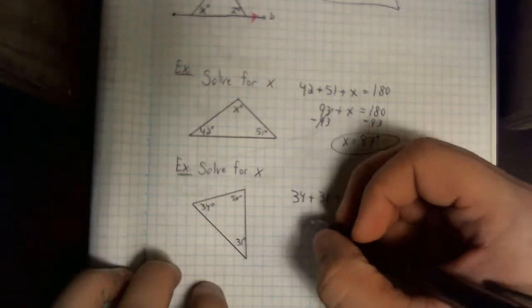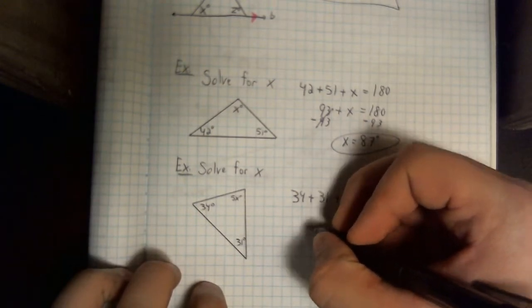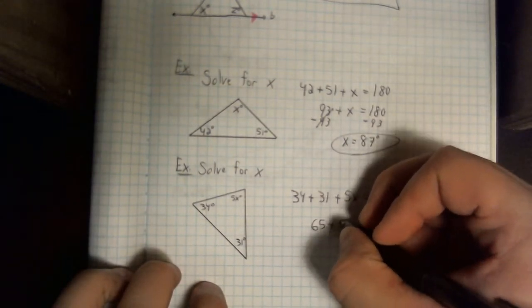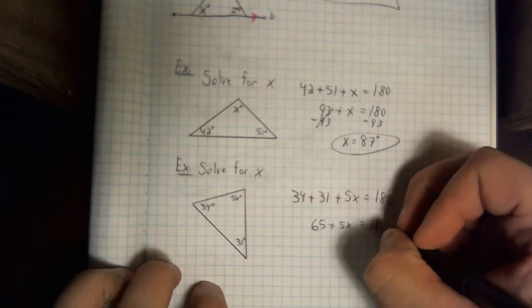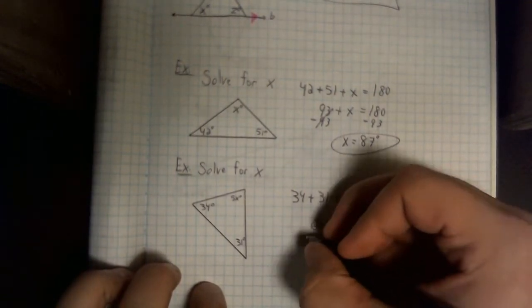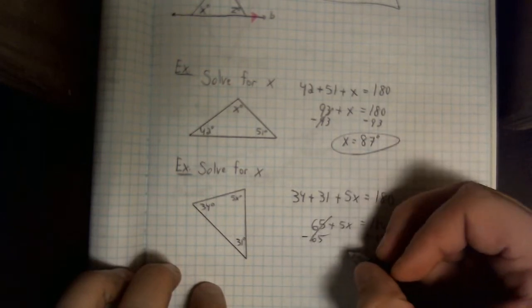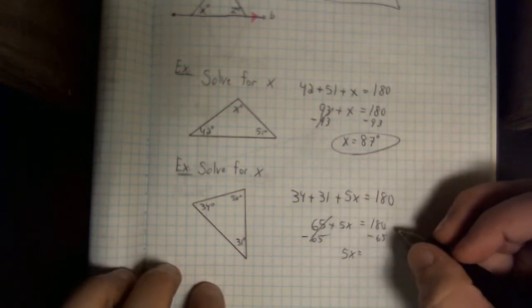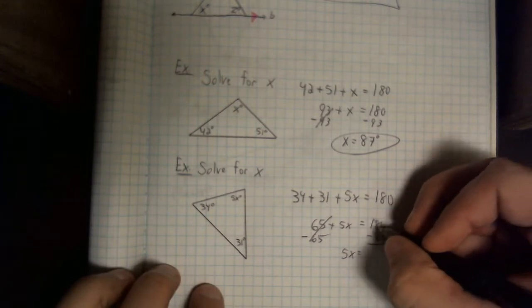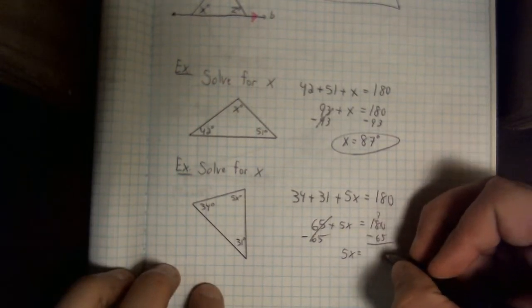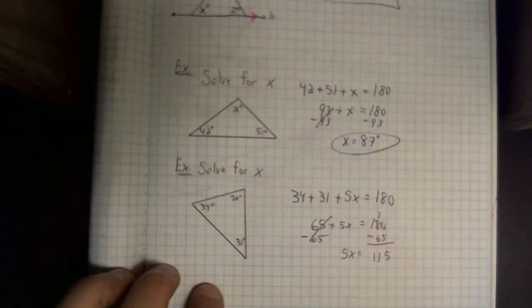34 plus 31 plus 5x is still going to add to 180 degrees. Alright, 34 and 31, when we combine those, gives us 65 plus 5x equals 180. Nothing's happened to these two things yet. Let's subtract away that 65. Let's see. I'm going to have to borrow. 7 minus 6 is 1, so 5x equals 115.